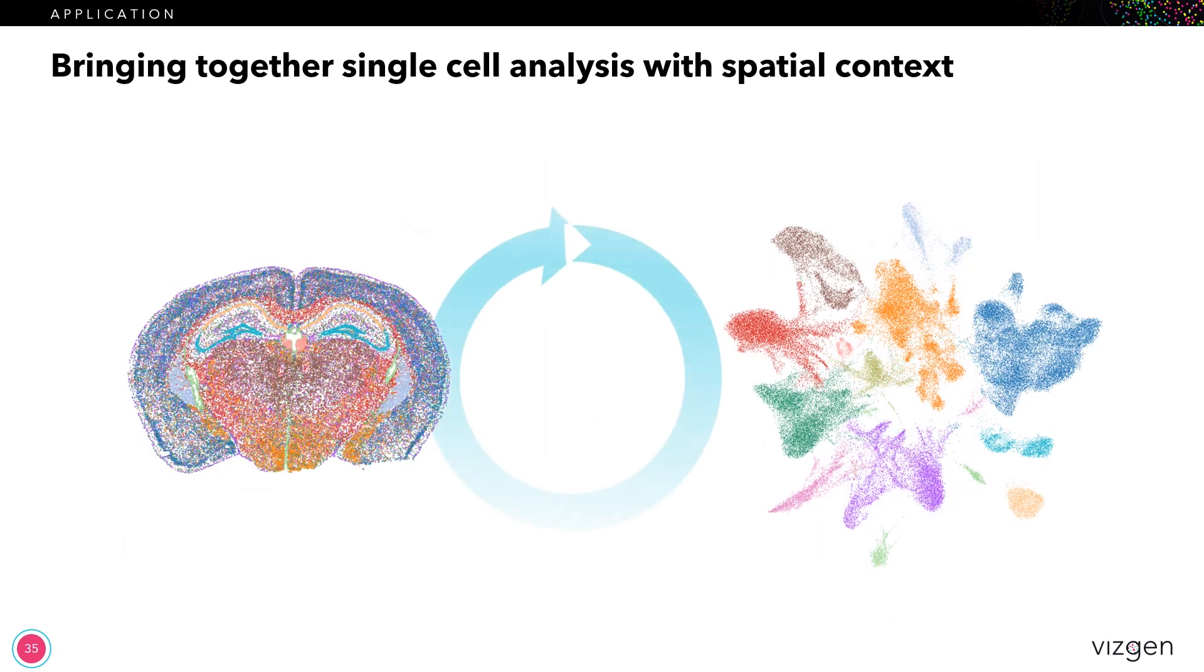And what's really been novel about this is now that for the first time, we really have the ability to interlace the spatial genomics with single cell. And so here you can see both the spatial mapping as well as the UMAP of the cell clusters.